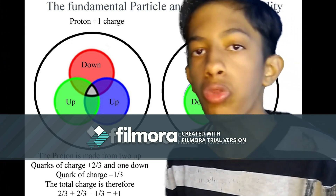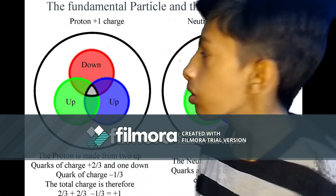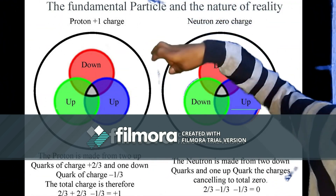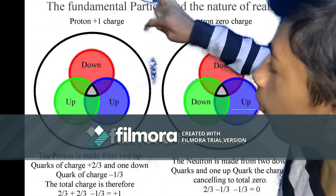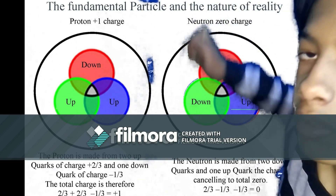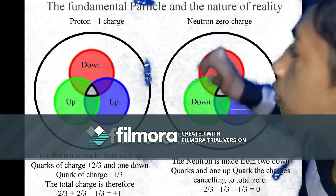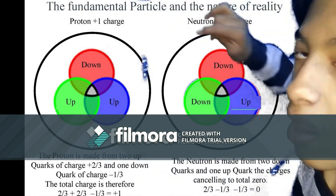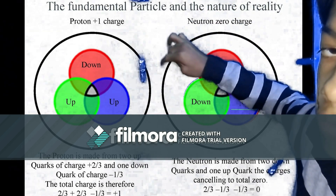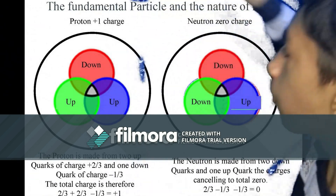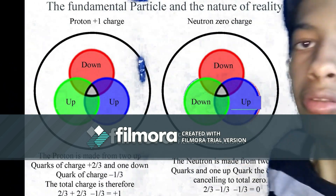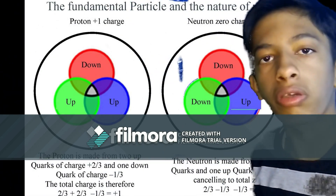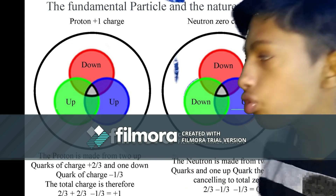The neutron has no charge because it is neutral. Inside the neutron there are also three quarks. The neutron has minus one-third, minus one-third, and plus two-thirds quark charges. That's why, when we calculate the result, the total charge equals zero.